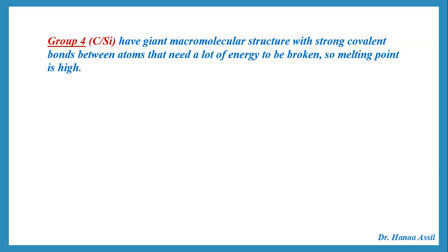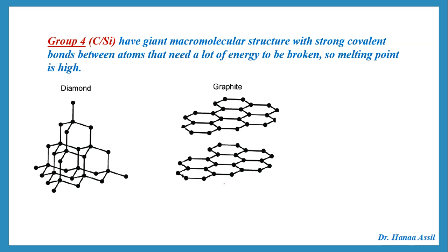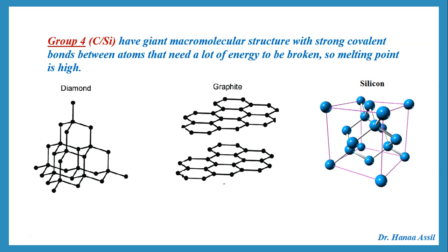Going to group 4, you should realize that group 4 elements — carbon or silicon, for example — have giant macromolecular structures. Carbon can have a giant three-dimensional tetrahedral structure in the form of diamond, or a giant structure of layers of six-sided rings like graphite. Silicon can also have a giant three-dimensional structure very similar to that of diamond. All of them have many strong covalent bonds that need a lot of energy to be broken, so the melting point of group 4 is the highest in the period.